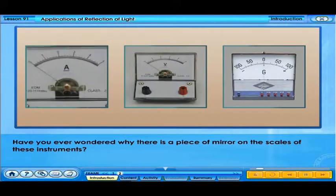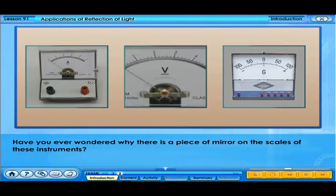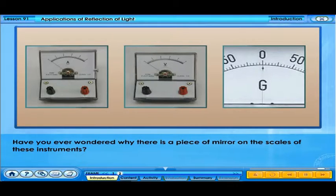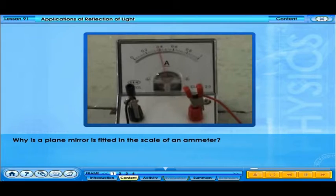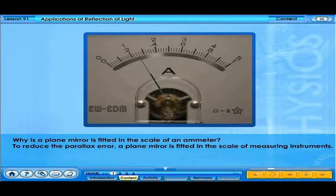Have you ever wondered why there is a piece of mirror on the scales of these instruments? Why is a plane mirror fitted in the scale of an ammeter? To reduce parallax error, the plane mirror is fitted in the scale of measuring instruments.